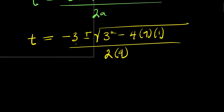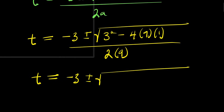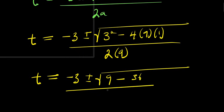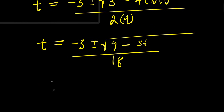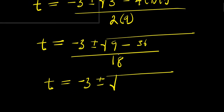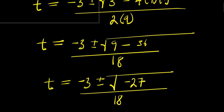So from here, t equals negative 3 plus or minus square root of 9 minus 36, divided by 18. So from here, t equals negative 3 plus or minus square root of 9 minus 36, which is negative 27, divided by 18.